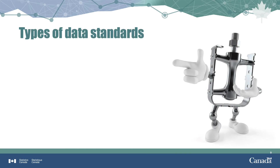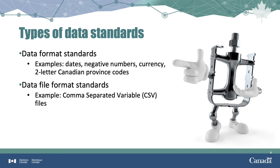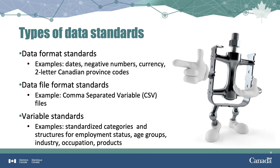There are different types of data standards. Data format standards are a standardized way to represent things such as dates, negative numbers, currency, and in Canada, we have two-letter codes for province names. Data file format standards ensure that files are easy to share and open — comma separated values, or CSV format, is a good one because files can be opened by a variety of different software packages. Variable standards are a way to standardize the categories and structures for variables that can only take on certain values, such as employment status, age groups, industry and occupation, and products.